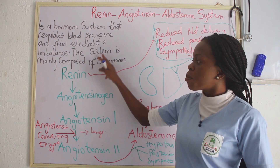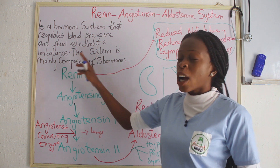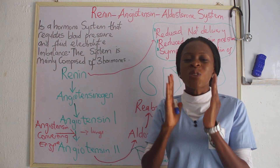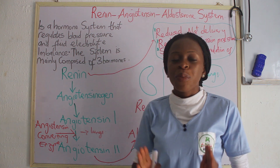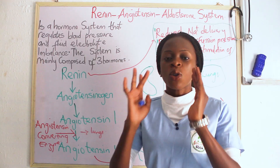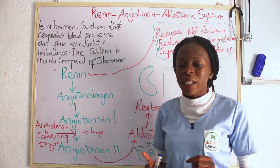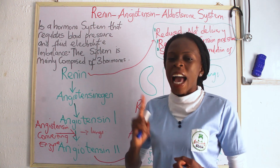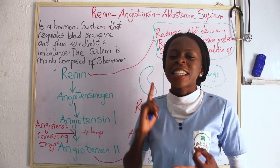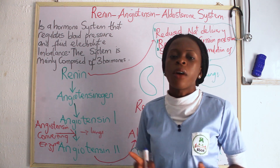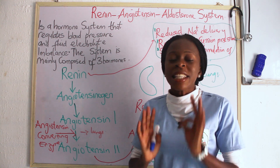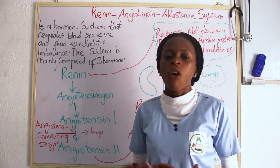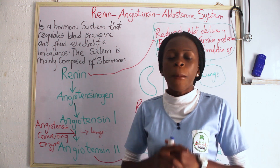This system is mainly composed of three hormones: namely Renin, Angiotensin, and Aldosterone. These three hormones help in the regulation of blood pressure.